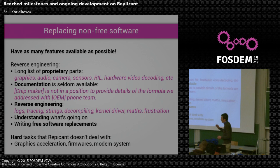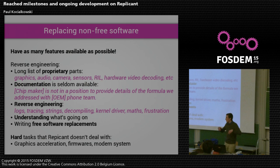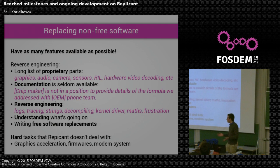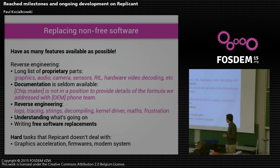We want to have something that works, so we need as many features as we can that work on Replicant. That's when we start doing reverse engineering, because we can't just say 'this is non-free, let's reject it,' because if you do that you basically cannot boot the system. So that's when we start looking at what the non-free piece is doing and whether we can do it with free software instead. That's the whole work behind Replicant — reverse engineering.